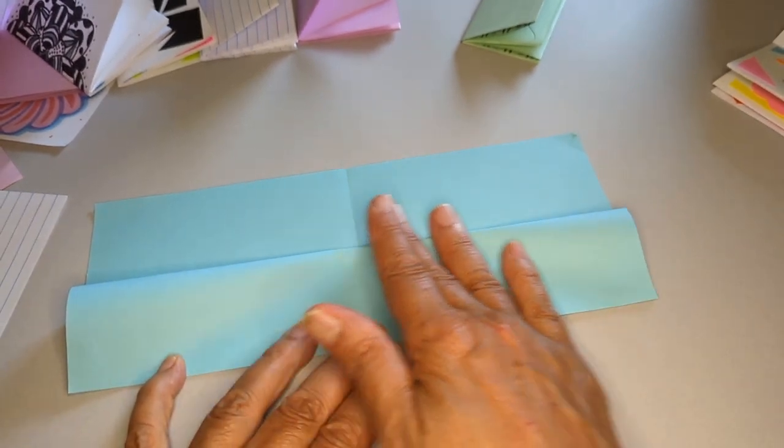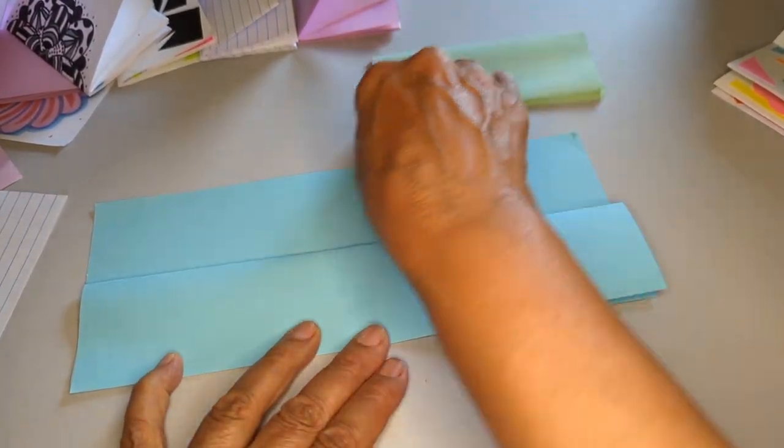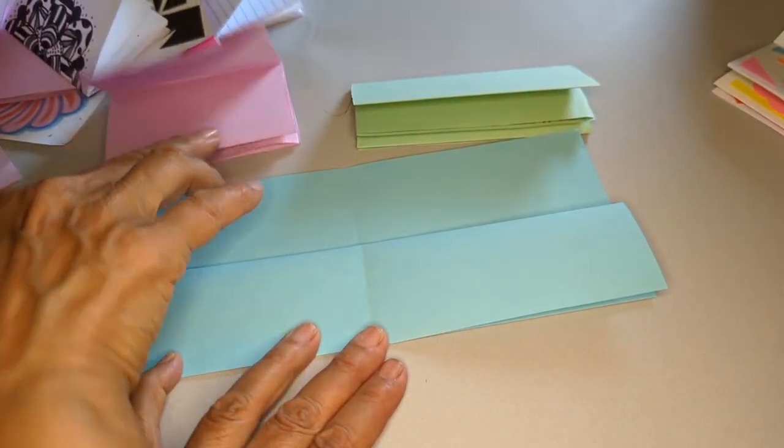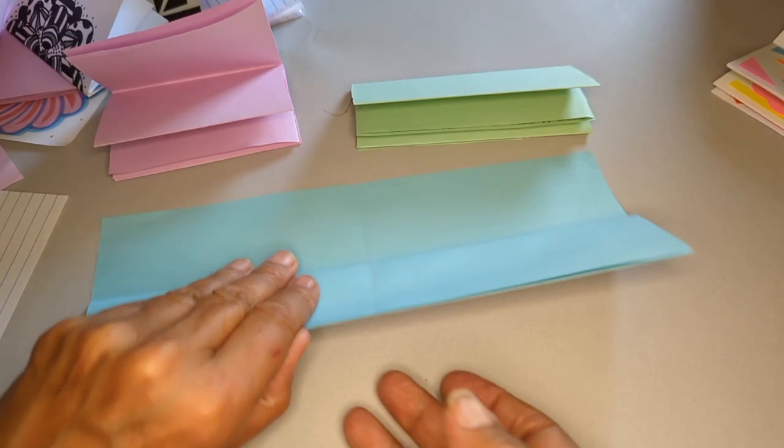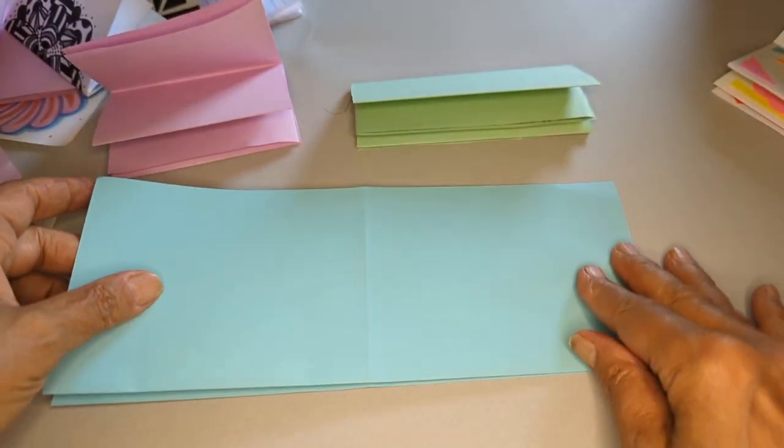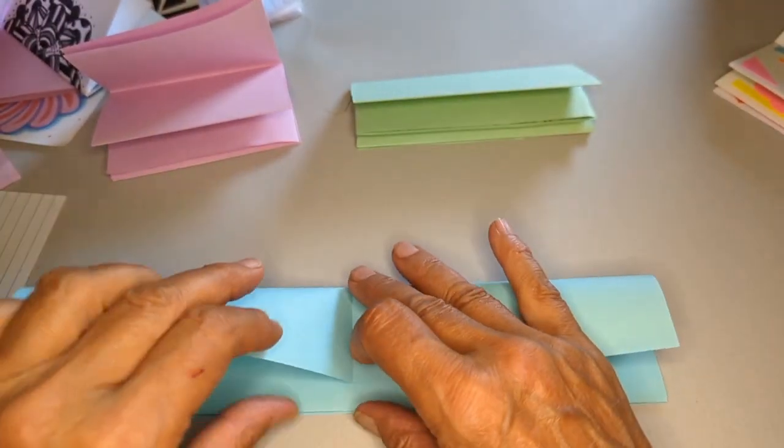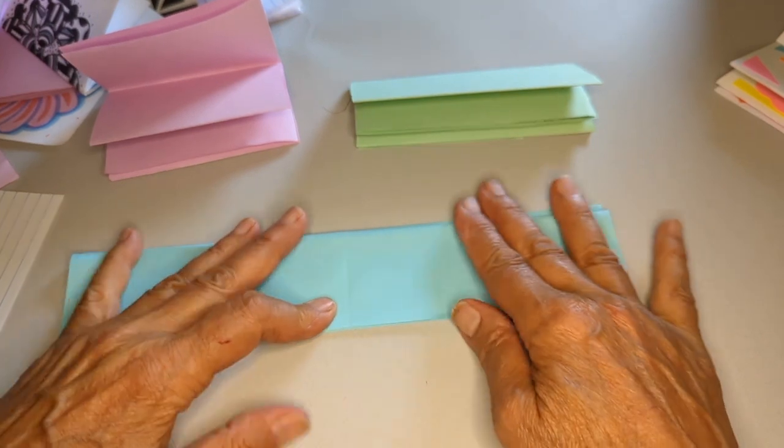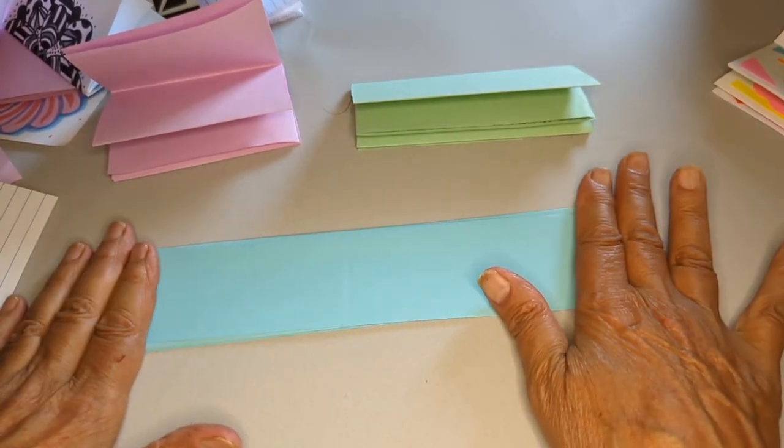Do you see how already it's taking on the proportions of this rather than this one? Flip it over. Do the banana peel fold again. There we go.